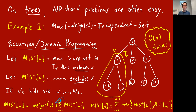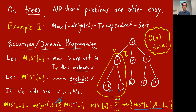And if you want to figure out MIS−[v], where you don't include v, then you're allowed to take any of the children into your independent set if you want — you don't have to, and it's not necessarily beneficial. So you sum over all children, and you can take the MIS value for the children when it's optional to include the root or not, by taking max(MIS+[child], MIS−[child]). This is a simple, correct, linear-time algorithm for computing the maximum independent set on a tree.